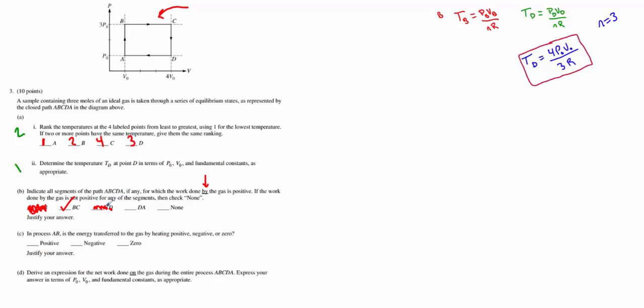And DA does have a change in volume, but that volume is decreasing, which means some outside source is actually compressing this gas. So something else is doing the work here. So in terms of by the gas, that's negative. So unfortunately, DA is also wrong. Basically, the only correct response would be BC. And justify it in a similar way I just did, but write it down. I'm not going to. This is worth two points.